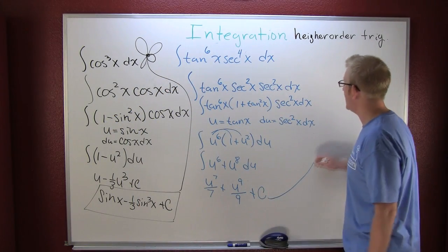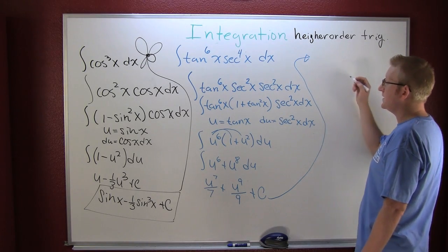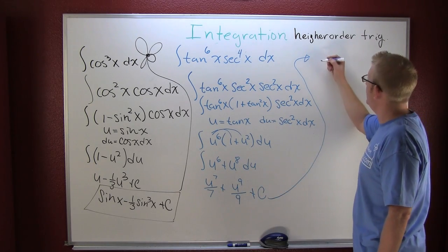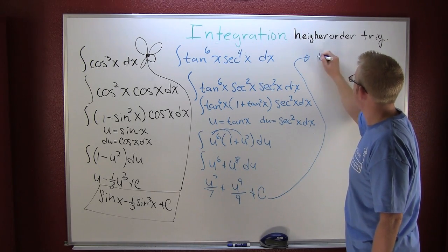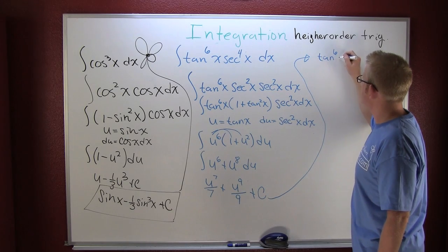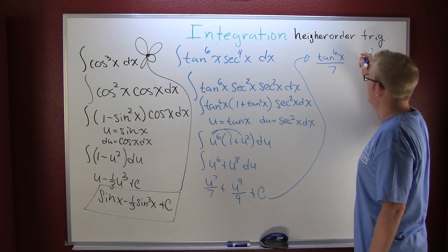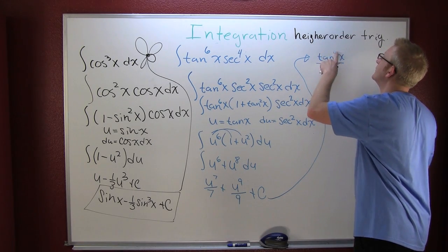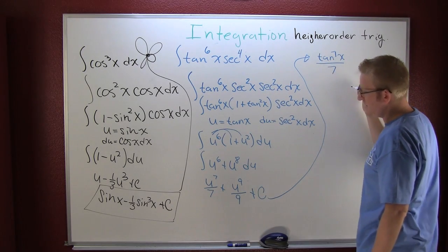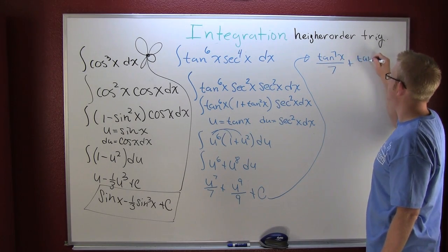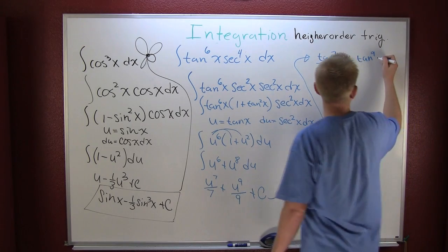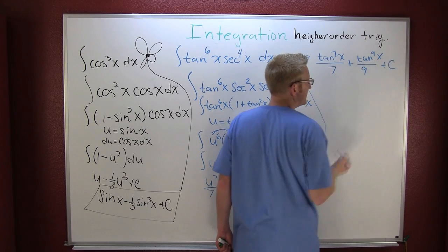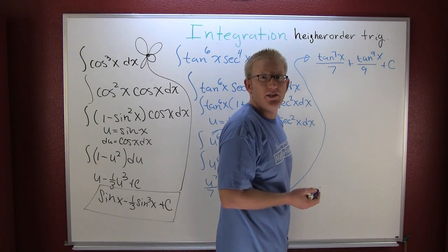I'm going to bring that guy right up here. I'm going to take it to the top. Show me tangent's where u's at. So then this is tangent to the seventh x over seven plus tangent to the ninth x over nine plus c. And then what? You're done.